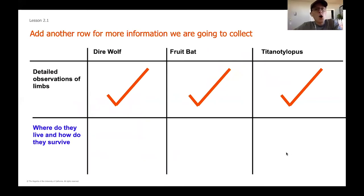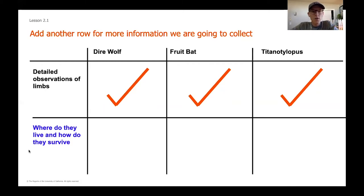Hopefully at this point you had a chance to make some observations of the different parts of those front limbs and recorded some detailed things about the shapes you saw or maybe the number of fingers on each of those limbs. We're going to move on now to read a little bit about those individual species. If you didn't get time to fill in the three boxes that should have check marks, go back, rewind the video, and make sure you are making observations of those three different species.